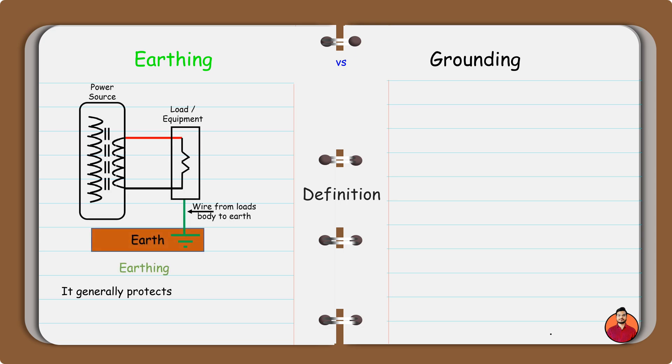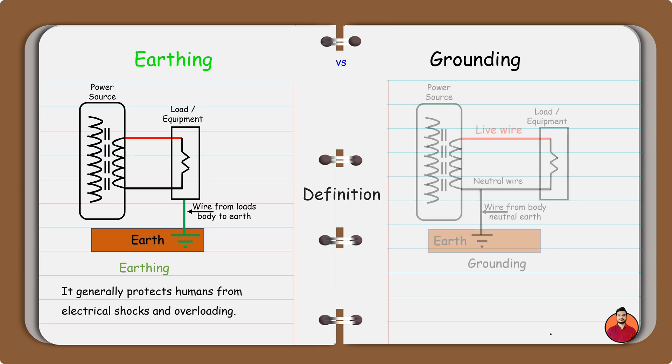Earthing generally protects humans from electrical shocks and overloading. Grounding insulates the entire system from power malfunctioning.